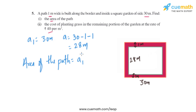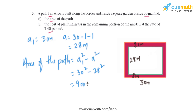We can now find the area of the path, which is the area of the bigger square minus the area of the smaller square — that is a₁² minus a². So it's 30² minus 28², which is 900 minus 784, which equals 116 square meters. That is the area of the path.